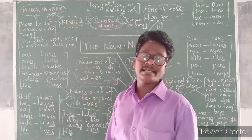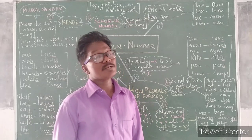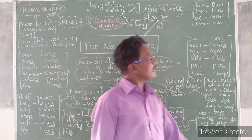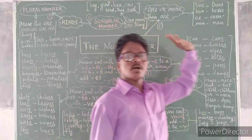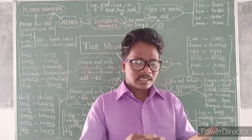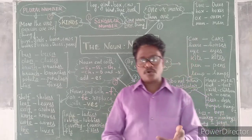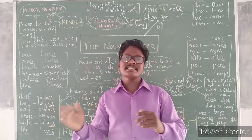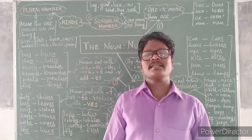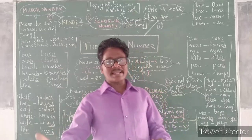So when you hear the word number, what do you understand? The number means one or more than one — like one, two, three, four, five, six, seven, eight, nine, ten. So number means one or more than one.